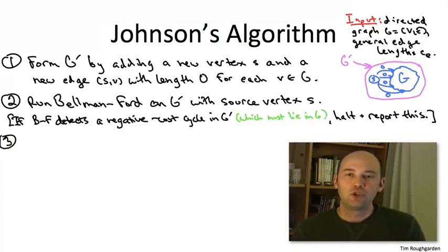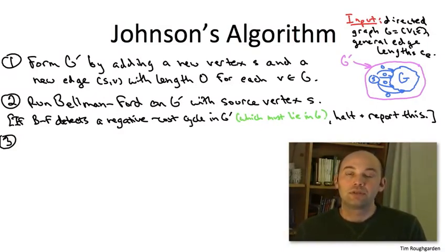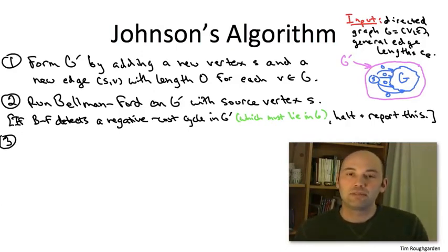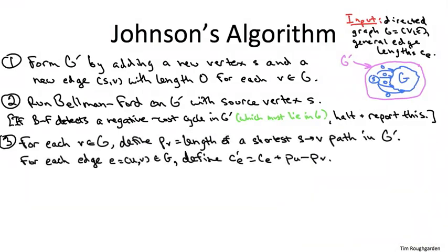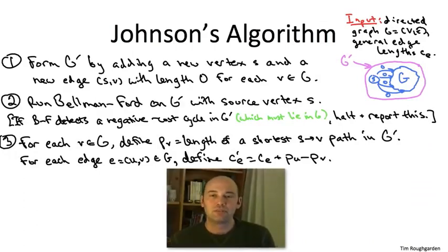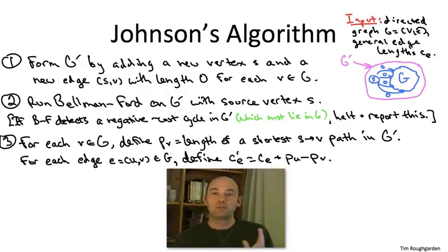From here on, we can safely assume that G and G prime have no negative cost cycle, and therefore that Bellman-Ford correctly computed shortest path distances from s to everybody else. We use these shortest path distances — all of which are finite by construction — as our vertex weights, our P sub V's. We then form the new edge lengths, the C primes, in the usual way: C prime of an edge E going from U to V is the original length C sub E, plus the weight of the tail P sub U, minus the weight of the head P sub V. We will shortly prove that these new edge lengths are always non-negative.